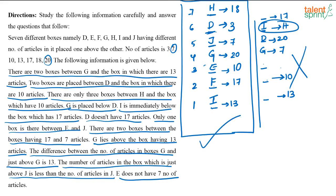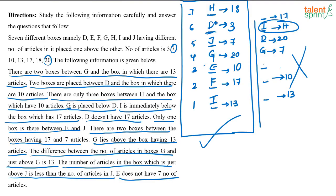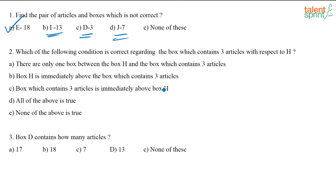Now for the questions. First question: find the pair of box and article count that is not correct. The answer is E-18, because H holds 18 articles, not E. The pairs I-13, D-3, and J-7 are all correct. Second question: which condition is correct regarding the box with 3 articles and H? Box D has 3 articles, and H is immediately above box D — so option B is correct.